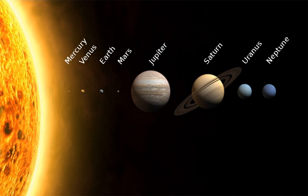The positions of the bodies in the solar system can be predicted using numerical models. Although the Sun dominates the system by mass, it accounts for only about 2% of the angular momentum. The planets, dominated by Jupiter, account for most of the rest of the angular momentum due to the combination of their mass, orbit, and distance from the Sun, with a possibly significant contribution from comets.